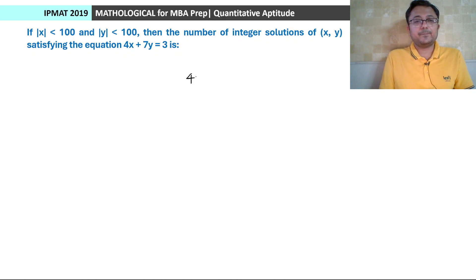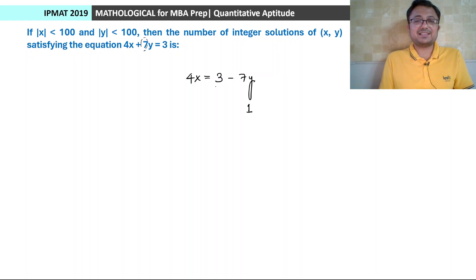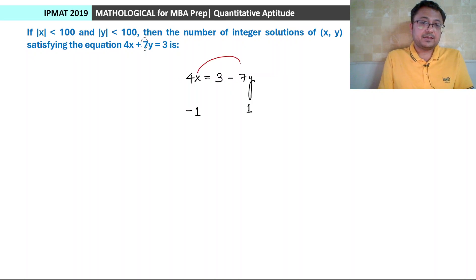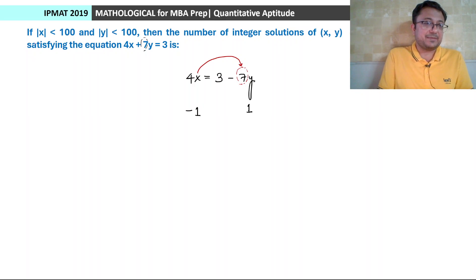Next question: 4x plus 7y is equal to 3. Since 7 is the larger coefficient, we write 4x equals 3 minus 7y. At y equals 0 no solution is found; at y equals 1, this becomes 3 minus 7 equals minus 4, so x equals minus 1. So the first solution is x equals minus 1, y equals 1. Since x changes by the coefficient of y (which is 7), x will approach the boundary faster. Both x and y have the range minus 100 to 100, so we focus on x.